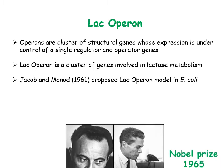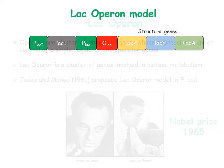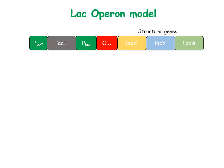Sir Jacob and Sir Monod were awarded the Nobel Prize for proposing the LAC operon model in E. coli. The LAC operon consists of three structural genes having a common promoter and operator, and is controlled by a repressor gene known as gene I.